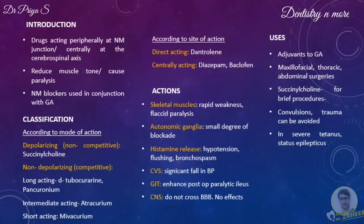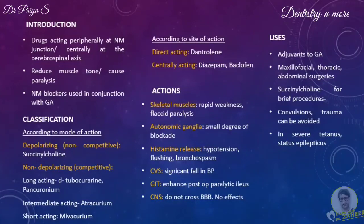Action on autonomic ganglia: there is inhibition of autonomic activity by interfering with neurotransmission within autonomic ganglia. This reduces sympathetic outflow to the heart, thereby decreasing cardiac output by decreasing heart rate and contractility. Regarding histamine release, the drug tubocurarine releases histamine from mast cells, resulting in hypotension, flushing, bronchospasm and increased respiratory secretions. On the cardiovascular system, tubocurarine produces a significant fall in blood pressure due to ganglionic blockade, histamine release and reduced venous return, the latter being a result of paralysis of limb and respiratory muscles.